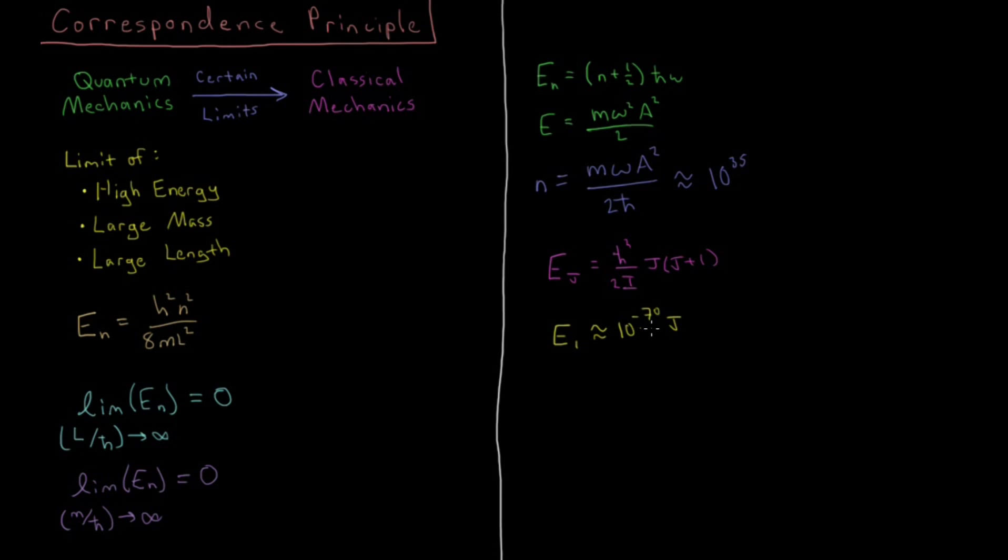So again, for classical objects, we don't see quantization in rotational motion either, because this is a very, very, very small energy relative to any classical energy scales. So we've looked at that. That we saw for our model systems for translational motion, for vibrational motion, for rotational motion. When we apply these formulae to any kind of classical object, all of these limits apply, and quantum mechanics does become classical mechanics.